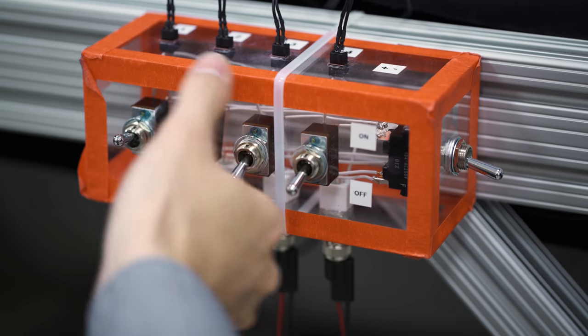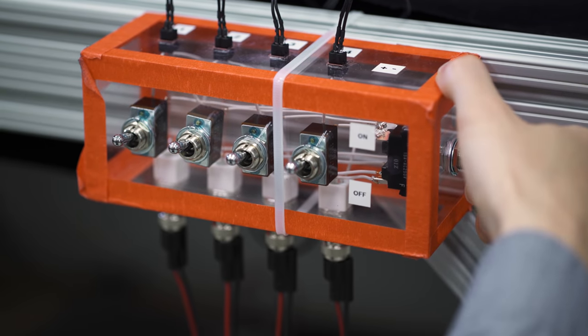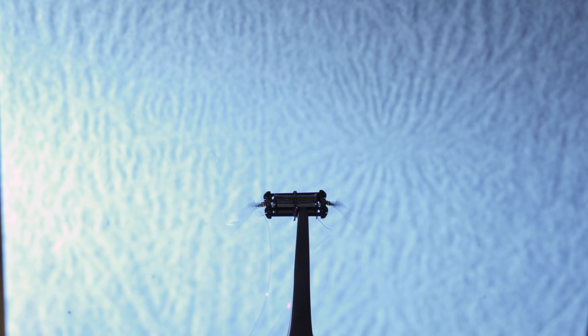When voltage is applied to the actuator, the electrodes squeeze the elastomer, and that mechanical strain is used to flap the wing.